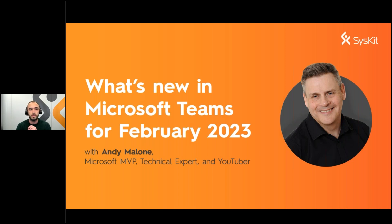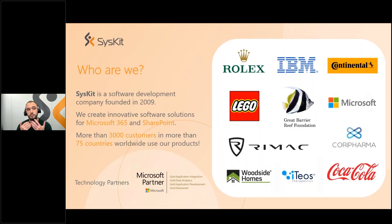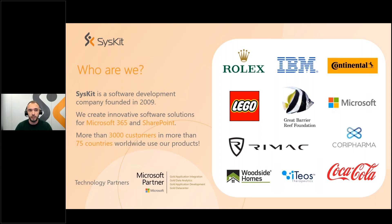Many of you already know us as a company, but for those who don't, let me do a quick introduction. Syskit is a software development company founded more than 13 years ago. We develop products for Microsoft 365 governance and security, as well as SharePoint on-premises administration. We currently have more than 3,000 customers all across the world, ranging from small businesses up to large corporations with hundreds of thousands of employees. We currently offer four products, including our award-winning SPDocket for SharePoint on-premises, as well as the Syskit Point platform for Microsoft 365 governance — this is the one we'll be demoing today.